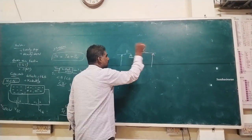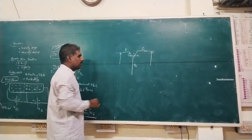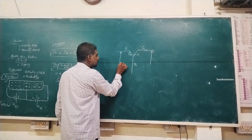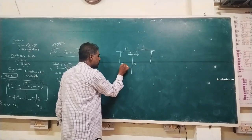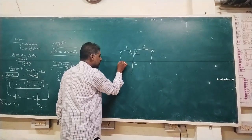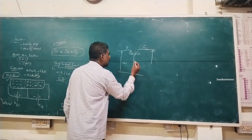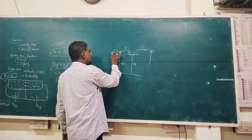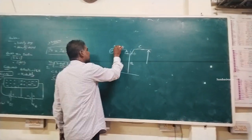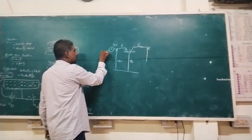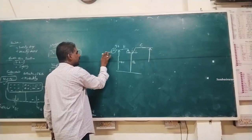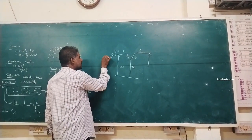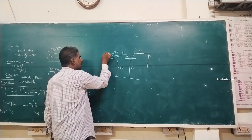The two junctions are the emitter side and the collector side. The base-emitter voltage VBE is measured along with emitter current IE. A resistor RE is used to limit the emitter current IE.